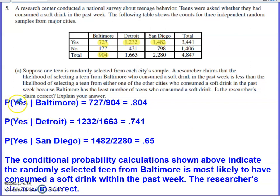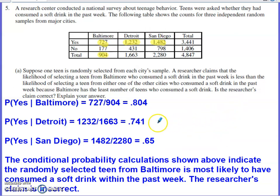What's the probability that the person answers yes given that they're from Baltimore? 727 out of 904 people from Baltimore answered yes, giving us an 80% likelihood. We do similar calculations for Detroit and San Diego and see smaller conditional probabilities for those cities. So the researcher's claim is definitely not correct — the person from Baltimore is most likely to have consumed a soft drink within the past week of any of the three cities.